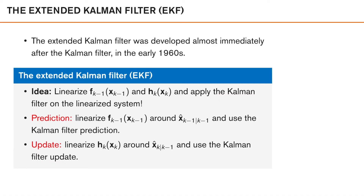The extended Kalman filter was developed shortly after the Kalman filter in the early 1960s, and the basic idea is simple and natural. If we have nonlinear models f_{k-1} and h_k, why don't we simply linearize these? Now that we have linear models again, we know how to handle these — that is, to use the Kalman filter.